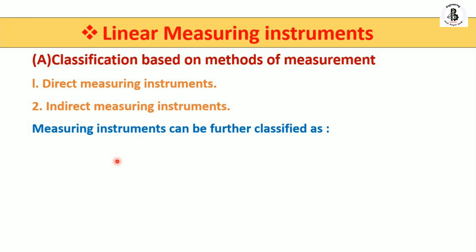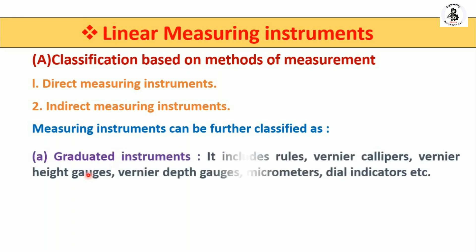The direct measuring instruments are further classified as graduated instruments. These include engineering steel rules, vernier calipers, vernier height gauges, vernier depth gauges, micrometers, dial indicators, and many more. By application of these measuring instruments, they give a direct reading from the object or from the observations.